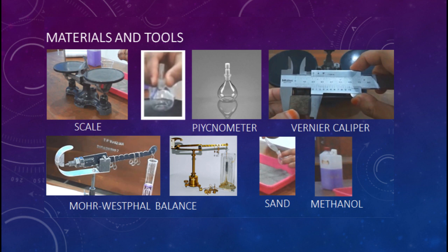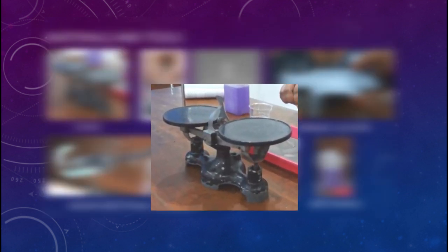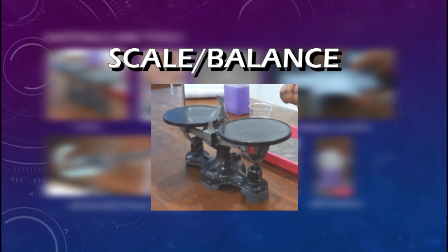I'll try to explain one by one. From the top left corner here, we have the scale or the balance. This is the torsional balance. This is very familiar for all students.